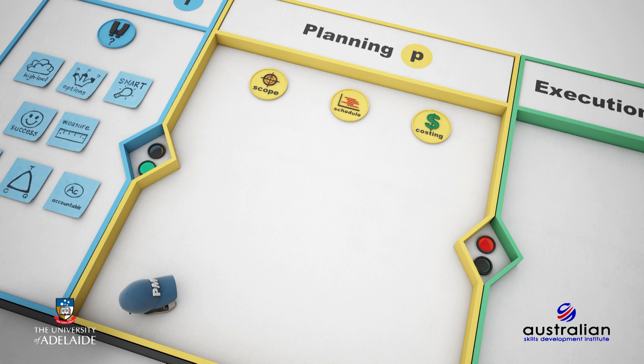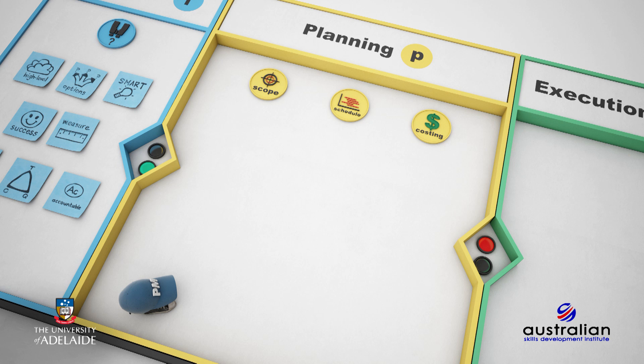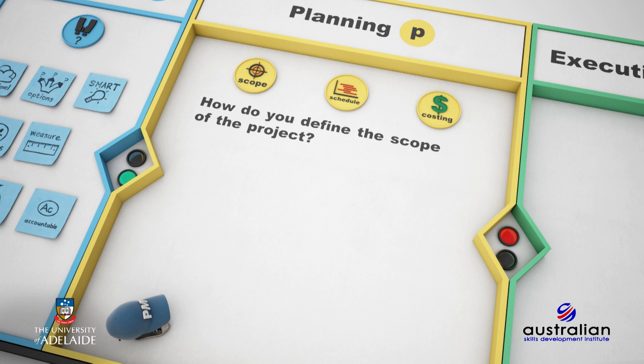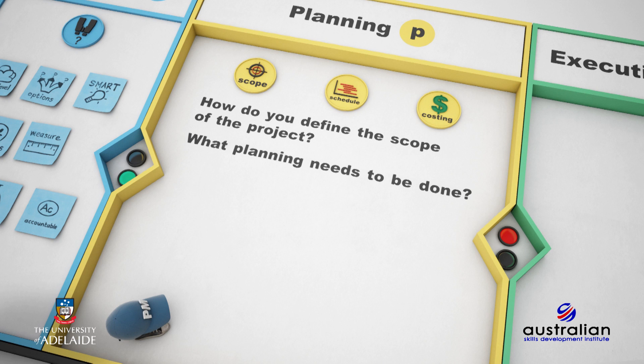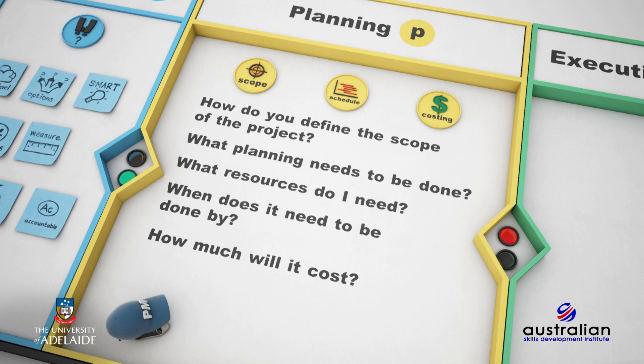Key questions you need to address include: how do you define the scope of the project, what planning needs to be done, what resources do I need, when does it need to be done by, and how much will it cost? In order to achieve some robustness in dealing with these questions, we would need to gather more information around the project objectives, what needs to be delivered, and how you might go about doing those things.